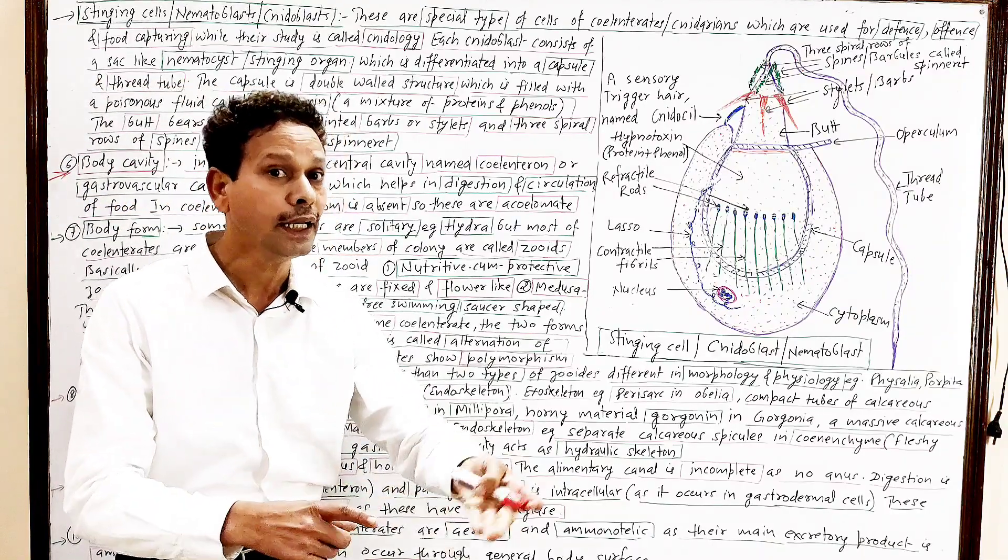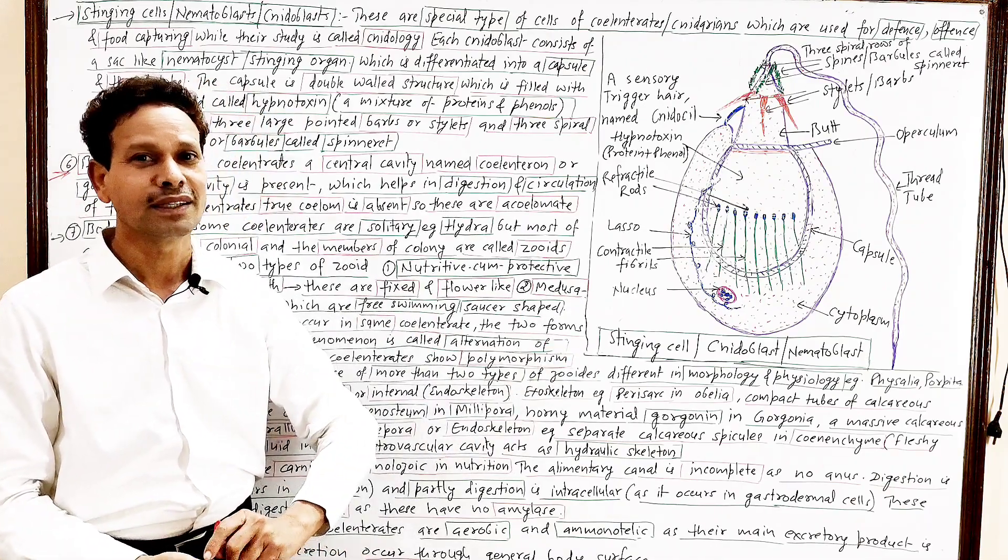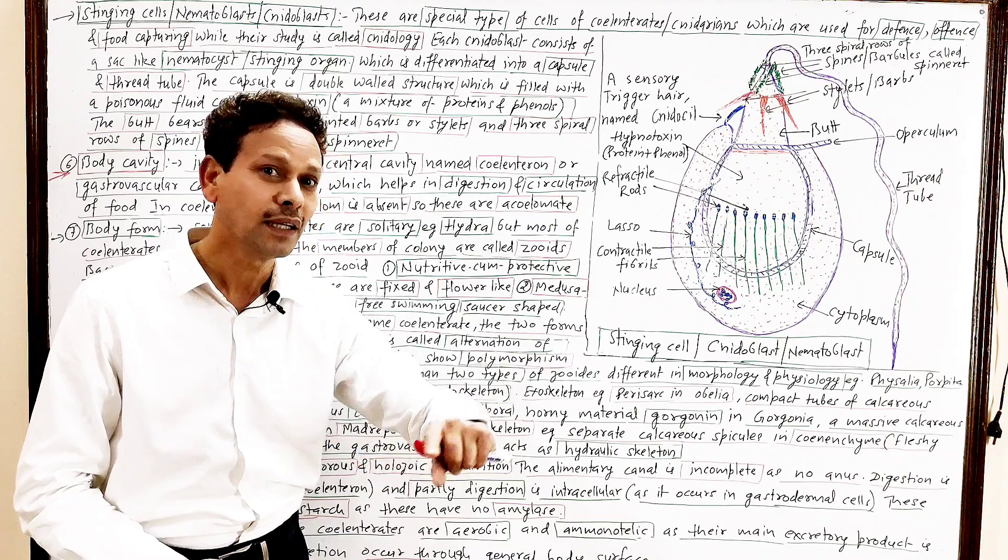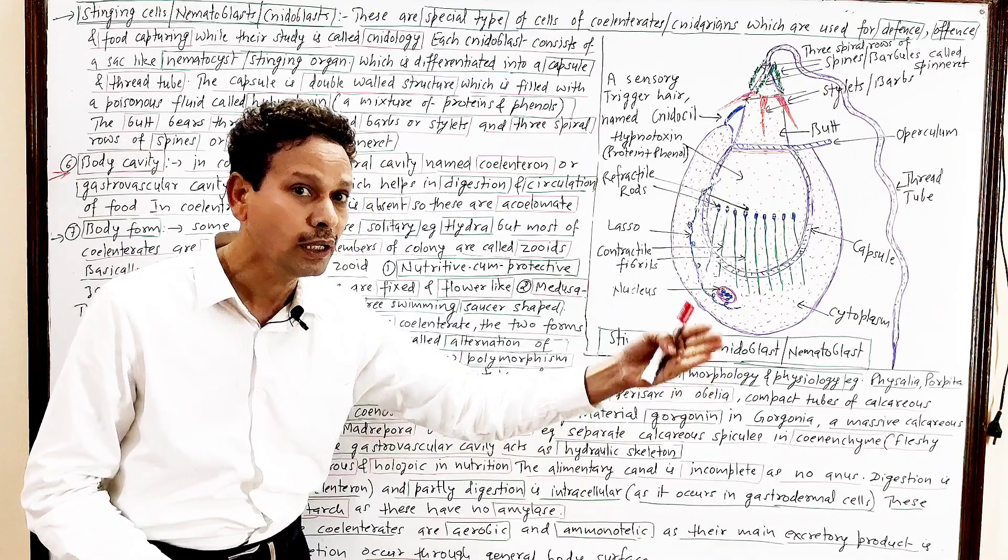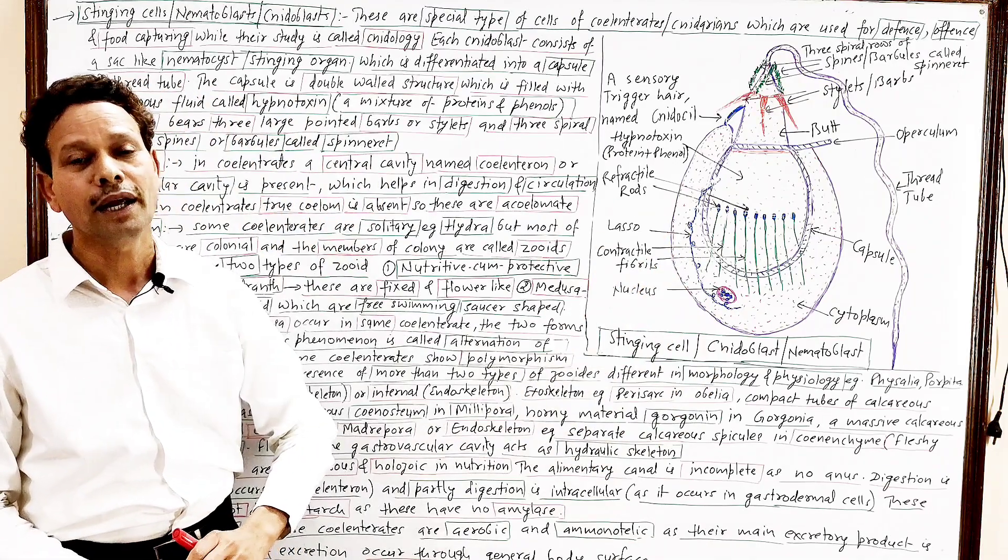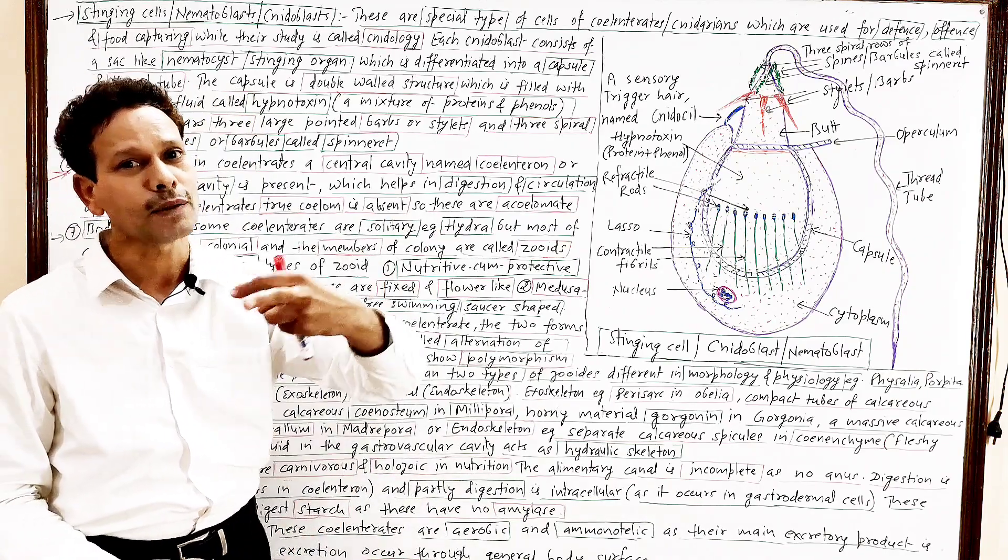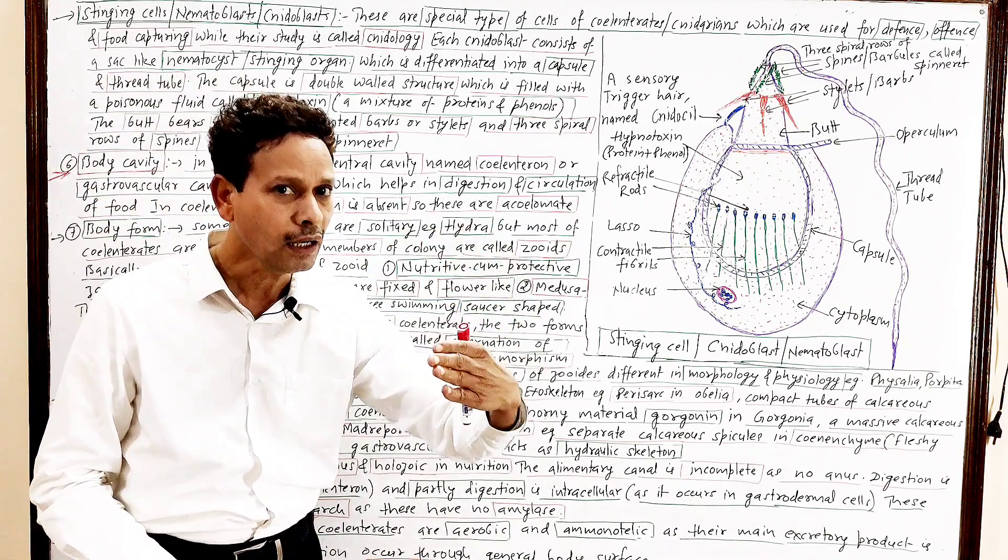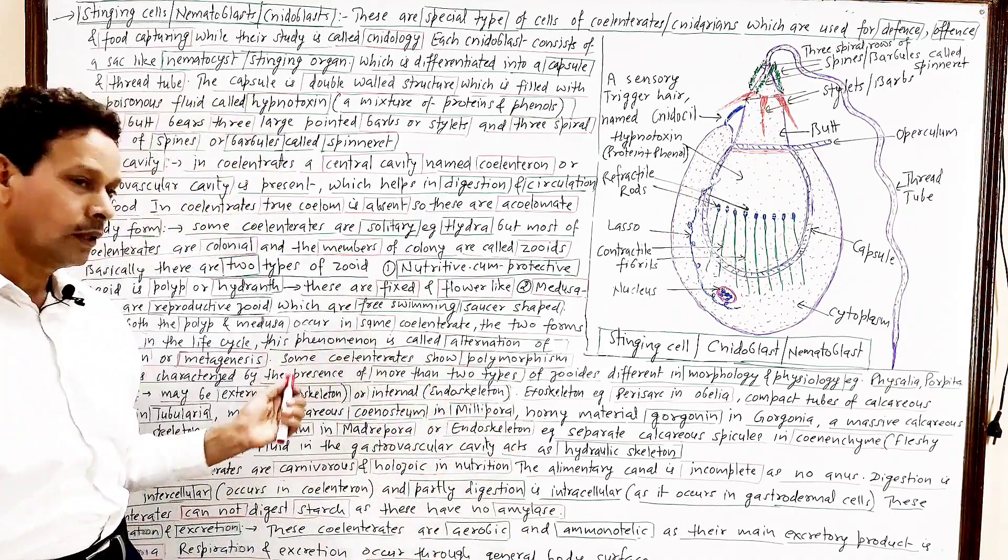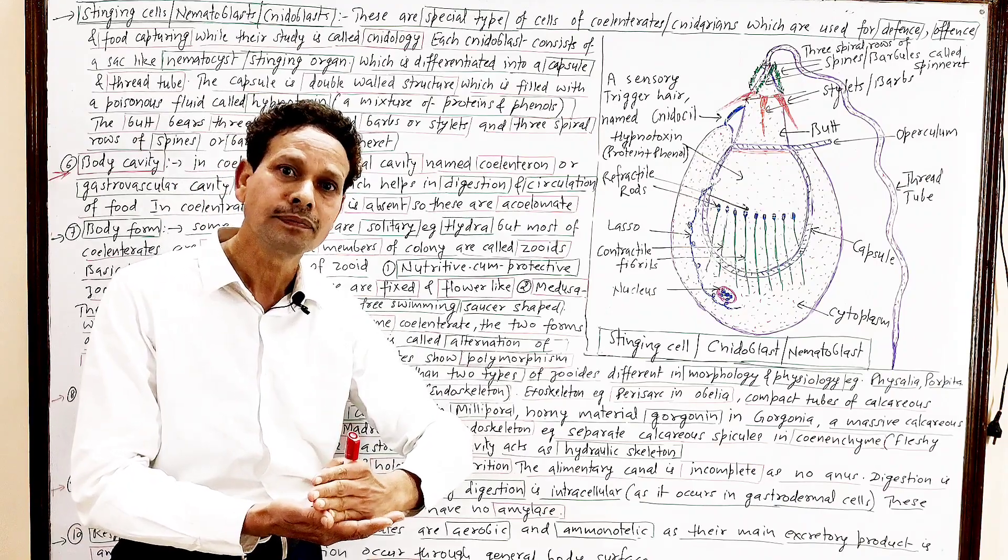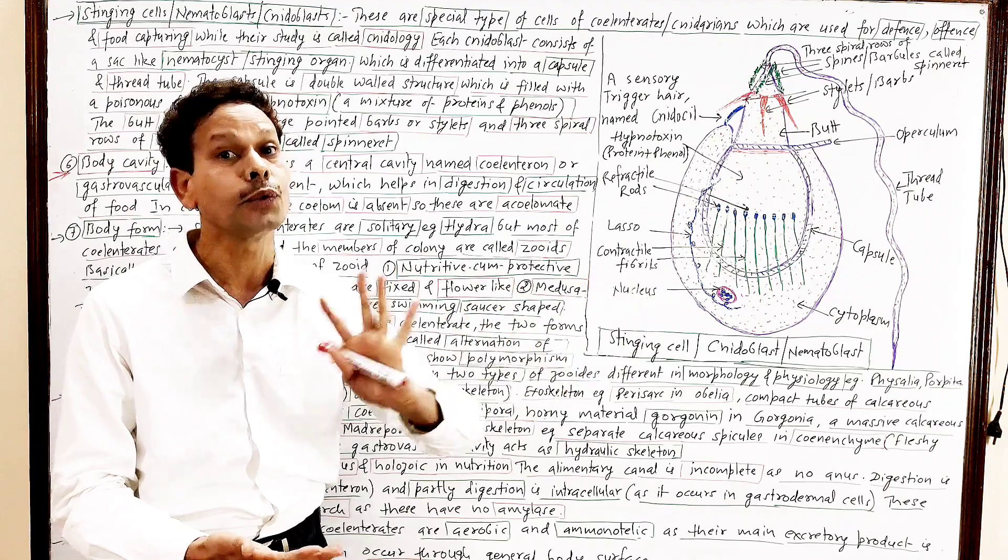Digestion, note down, digestion that is partly intracellular. Means digestion occurs inside the cells. As well as digestion occurs in the gastrovascular cavity. Means digestion is partly extracellular. Within the cell, and partly it is intracellular. Outside the cells. Four types of digestion, intra within a cell, extracellular outside the cells. And the digestive system, only mouth is present, no anus. It is incomplete digestive tract.